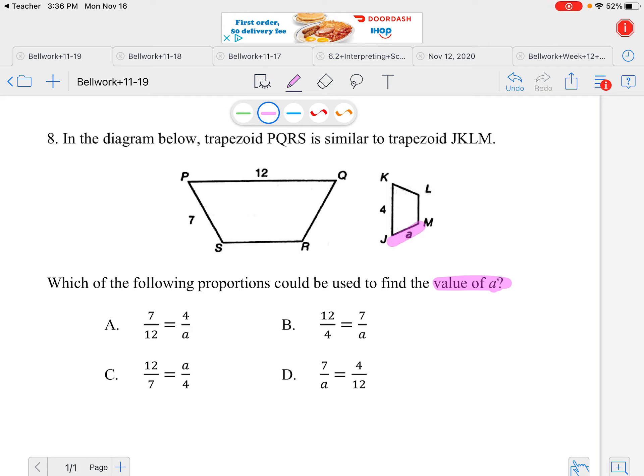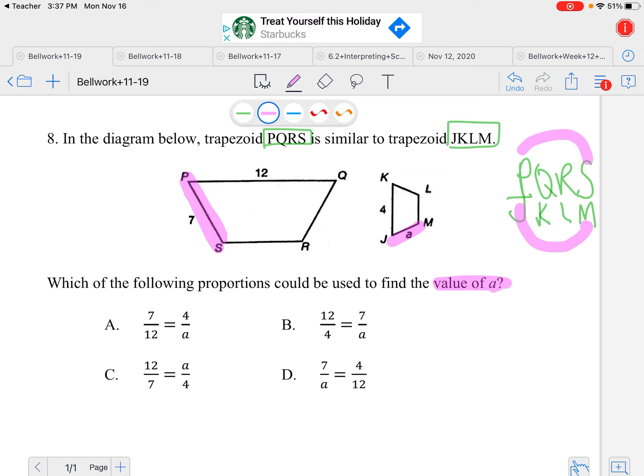So a is from J to M. If I stack my letters, I have PQRS and I stack it up with the second one JKLM. J to M was the first and last letter, so to know which one matches with that I look at the top and see what is the first and last letter and it's P and S. So that would be this side, so I'm color coding first. 7 and A need to be the same color.